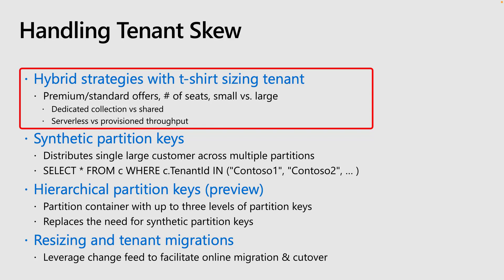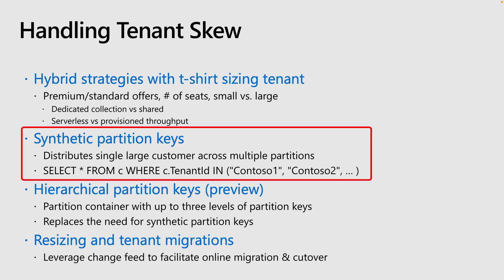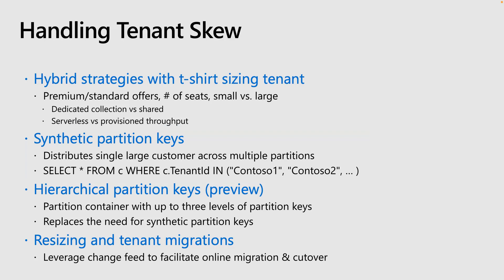If you're using a partition key per tenant, you might run into the situation where a large tenant's data reaches the maximum amount of data that a single logical partition can hold, which is currently 20 gigabytes. One way to deal with this is to use a synthetic partition key that distributes a single large customer across multiple partitions. For example, running a query where the tenant ID is Contoso 1 or Contoso 2, or creating a key from an existing field like tenant ID combined with user ID. However, there's a trade-off: tenant-wide queries are always cross-partition unless you include all the users, which is unlikely. These cross-partition queries, called fan-out queries, typically come with a much higher cost and also increase query and app complexity.